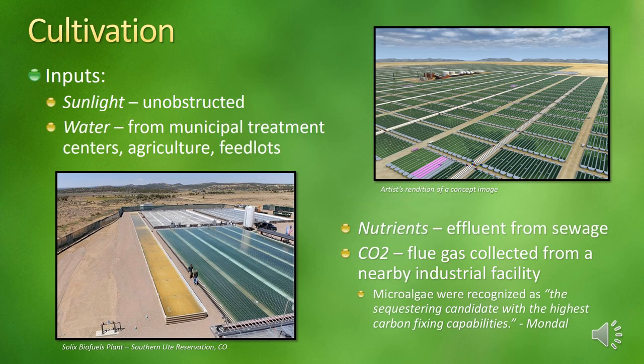Originally, the Aquatic Species Program had imagined monocultures of algal ponds on land, not dissimilar to conventional farming of traditional crops. These types of ponds are called open raceway ponds. The Solix Biofuels plant on the Southern Ute Indian Reservation in southwest Colorado is an example of a real facility — so this is actually happening, just not yet on a level that can compete with fossil fuels.